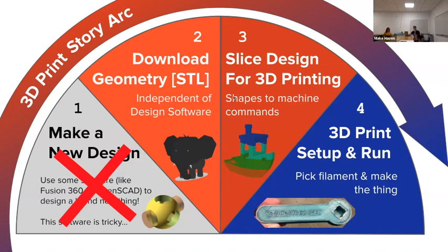Obviously if you have thicker layers the print becomes less accurate. Different printers also have different effects in terms of what they look like when done. Once we've completed slicing after getting our geometry, step four is to go ahead and 3D print the model.